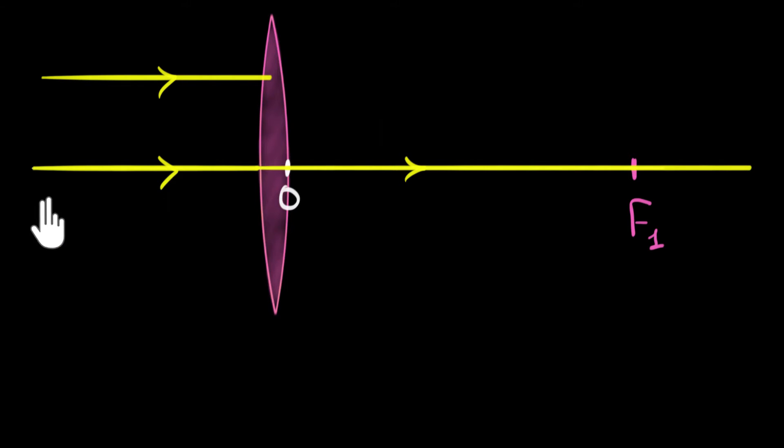Well, since this ray is parallel to our principal axis, it has to pass through its principal focus. The rays of light would have been focused at this point, and so the image would have been formed at this point, but that is neglecting the second lens.